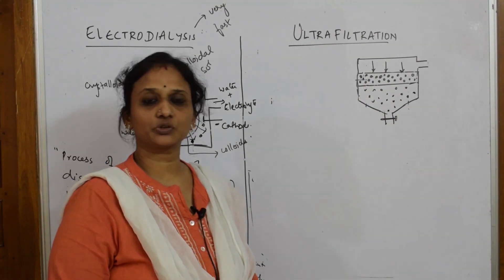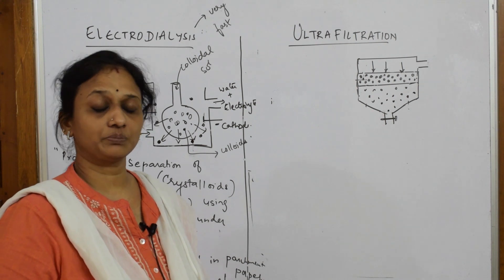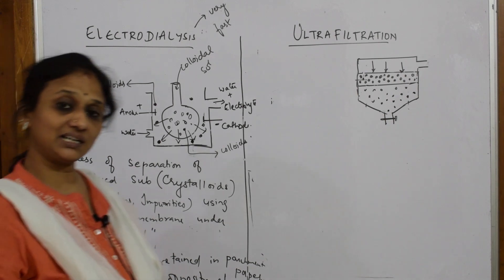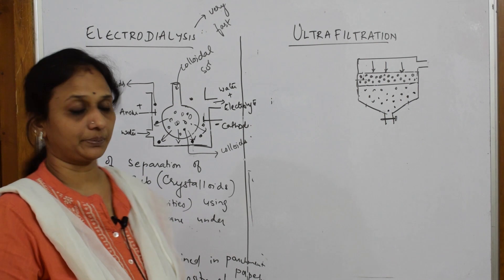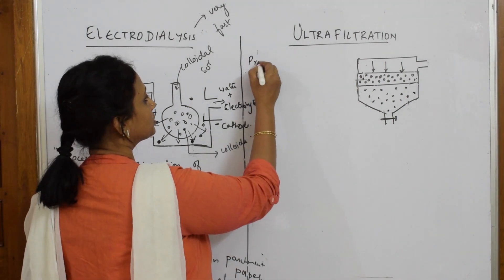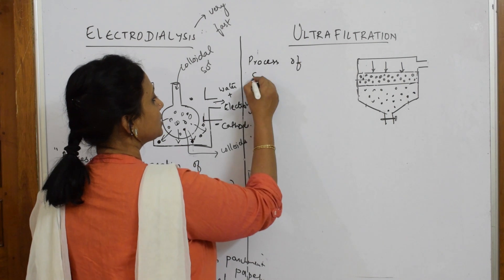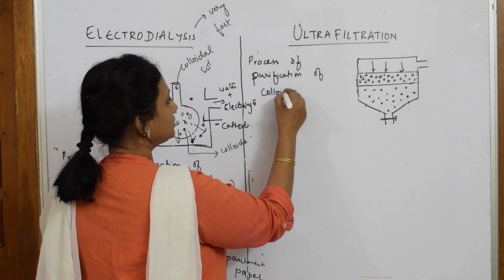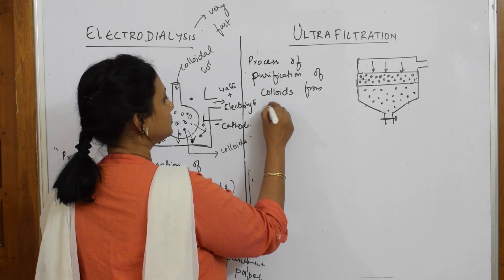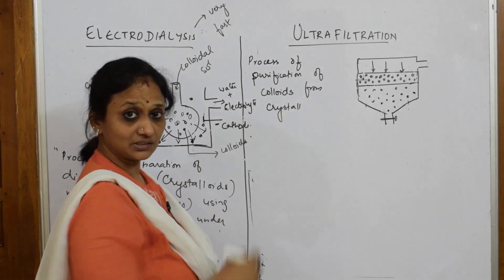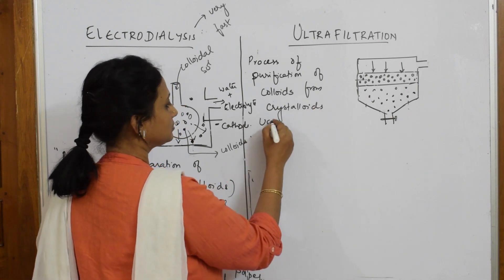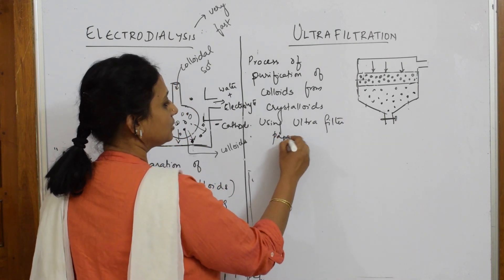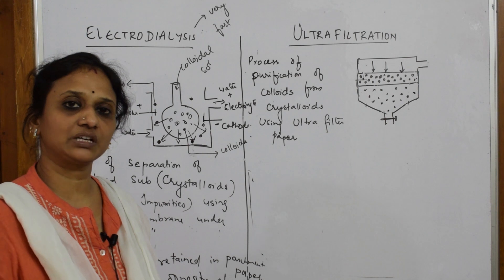Now let us learn the next purification process: ultrafiltration. In dialysis and electro dialysis we used the dialyzing membrane, but here we use ultrafilter paper. Ultrafiltration is a process of purification of colloids from crystalloids using ultrafilter paper.